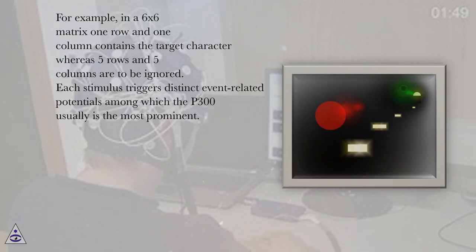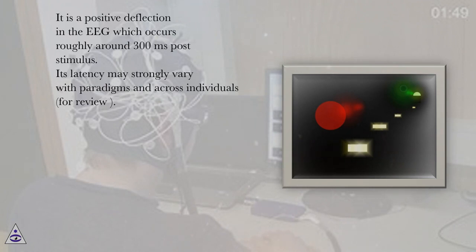Each stimulus triggers distinct event-related potentials among which the P300 usually is the most prominent. It is a positive deflection in the EEG which occurs roughly around 300 ms post-stimulus. Its latency may strongly vary with paradigms and across individuals, for review.